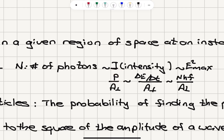Power is delta E divided by delta T — the energy transferred per unit time divided by perpendicular area. The energy carried by capital N photons is N times HF, the energy of one photon. So intensity is proportional to the number of photons N, and it is also proportional to E_max squared, where E is the electric field component of the electromagnetic wave associated with the photon.